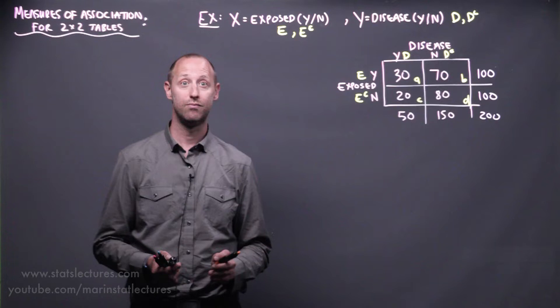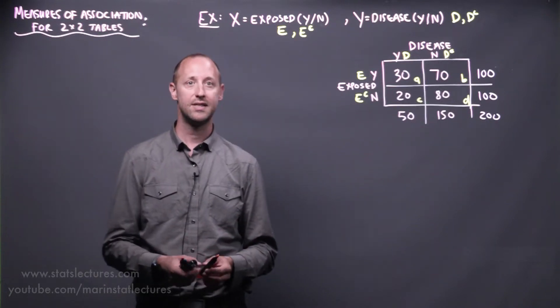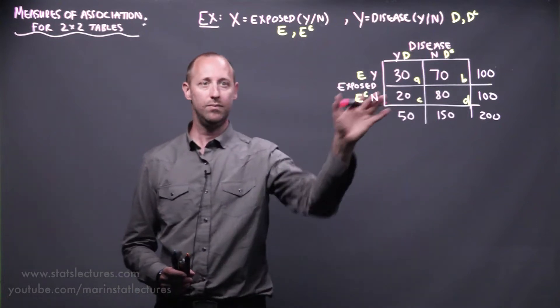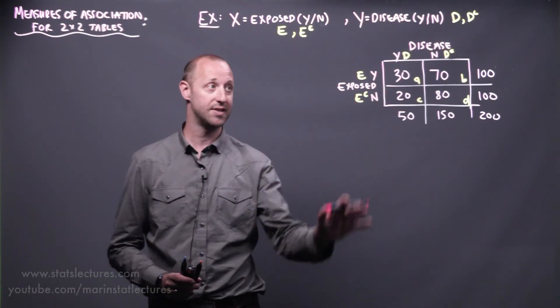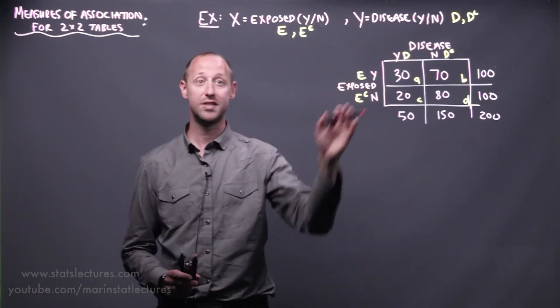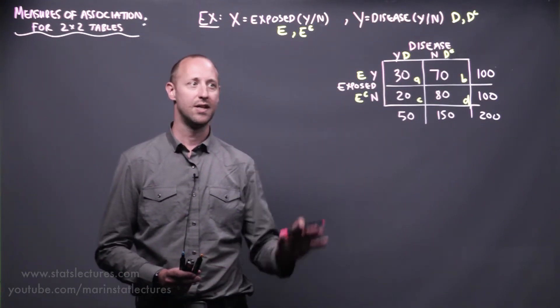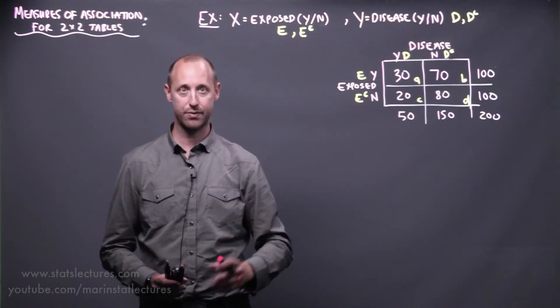Just a reminder that when working through the chi-square test, this tells us nothing about the direction or strength of association. So if we ran through the chi-square test here and found that exposure and disease were related, or we had evidence to believe they were related, it still wouldn't tell us does exposure increase or decrease your risk, and it doesn't tell us by how much.